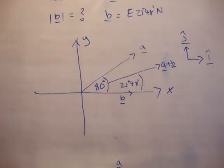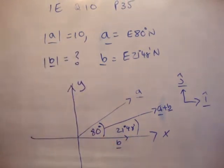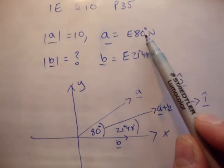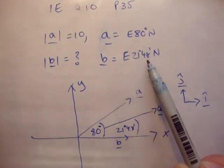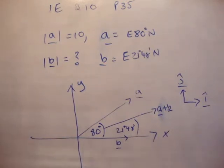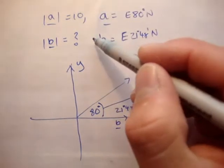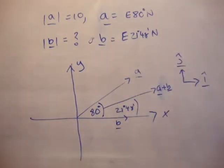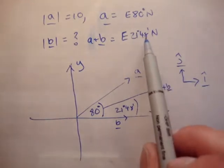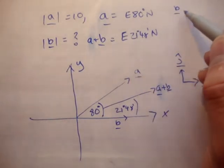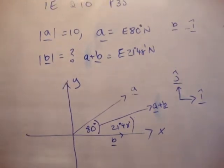We're given that the vector a has a magnitude of 10 units. Its direction is 80 degrees north of east. The vector b has unknown magnitude and its direction is along the positive x axis - that is, along the i-hat direction. We need to find the magnitude of b if a plus b has a direction of 21 degrees 48 minutes north of east, giving your answer correct to two decimal places.